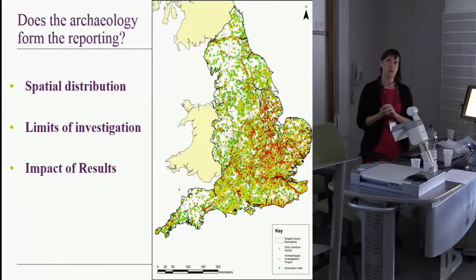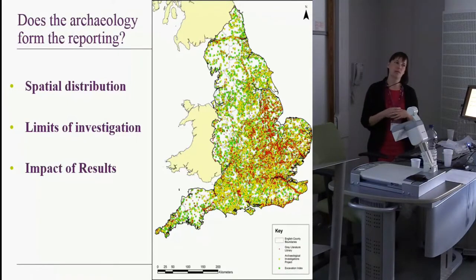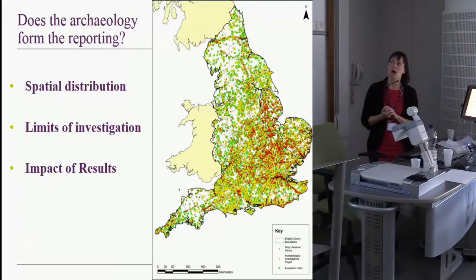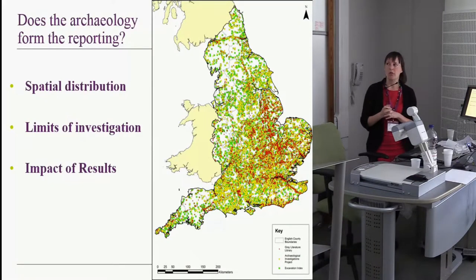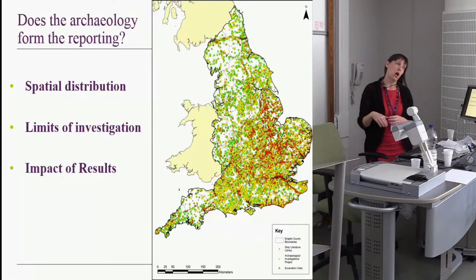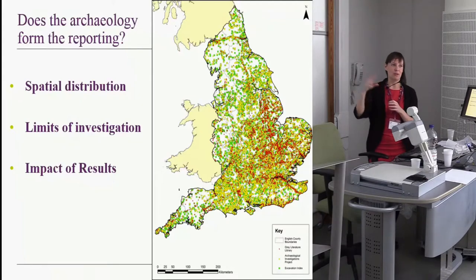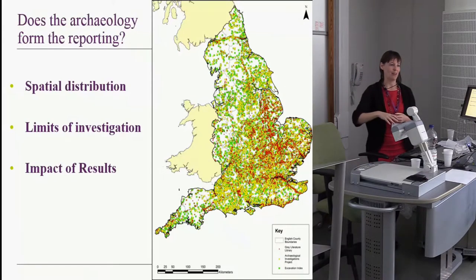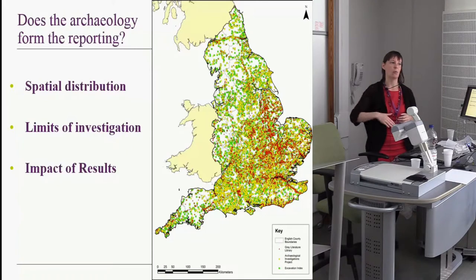Their reporting looks different because they're reporting on, say, an area where they do more geophysical surveys or a different approach. Mining through the excavation index data, we've noticed a real difference in the type of work people do in different areas. Survey work — walkover, geophysics, aerial surveys — is far more popular in the north than in the south. In the south there's a lot more trial trenching; moving north it turns into more test pitting; and moving even further north there's no evaluation — you go from survey work to open area excavation. There's a clear difference in how we're working across the country.